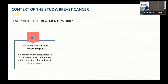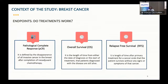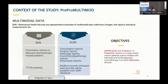After those treatments, clinicians measure several endpoints to assess how well the treatment went. The first is called pathological complete response, defined by the disappearance of invasive cancer cells after completion of neoadjuvant chemotherapy. We also have two survival endpoints: overall survival, which is the length of time from diagnosis or first treatment that the patient is still alive, and relapse-free survival, meaning the patient is alive with no sign of cancer relapse.